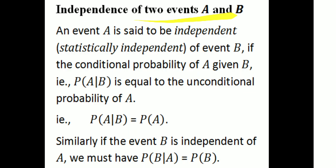For independence of two events A and B: an event A is said to be statistically independent of event B if the conditional probability of A given B, that is P(A|B), is equal to the unconditional probability of A. That is, P(A|B) = P(A).